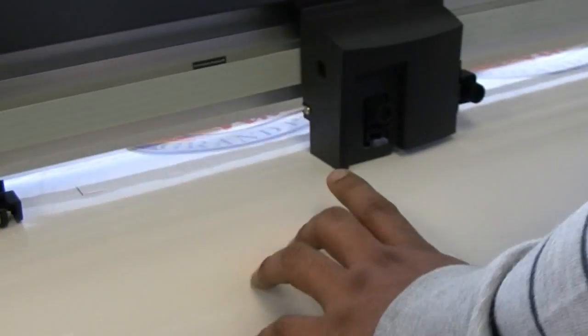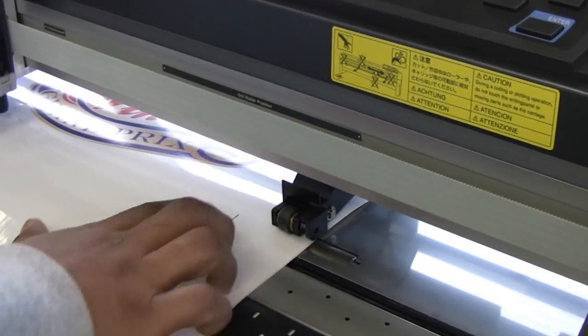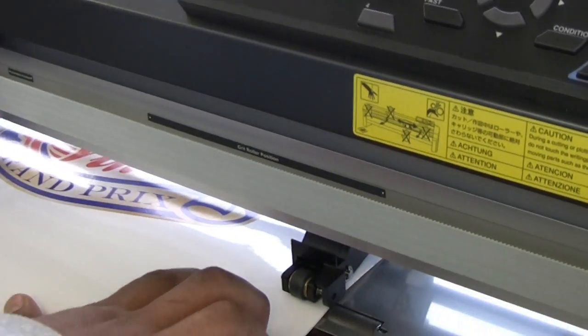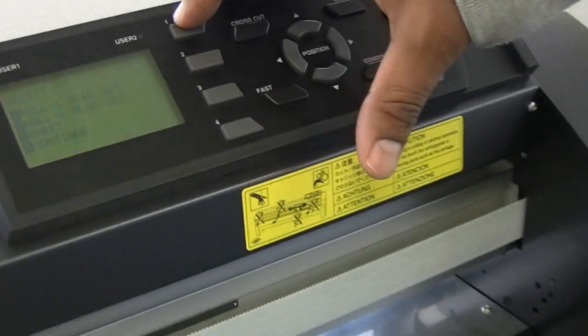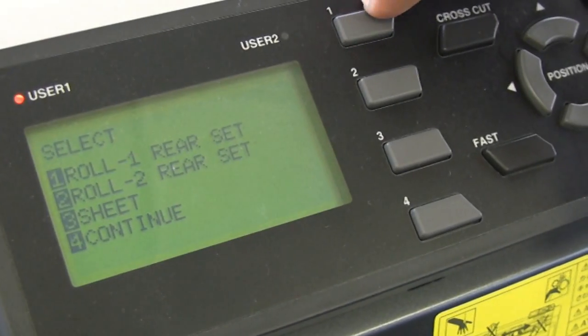So we load it, align it, bring the push rollers down, and always select row one or sheet when doing a print and cut job.